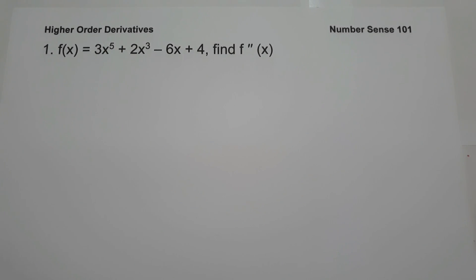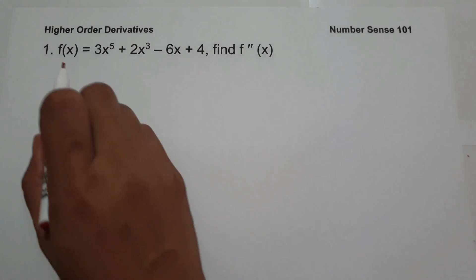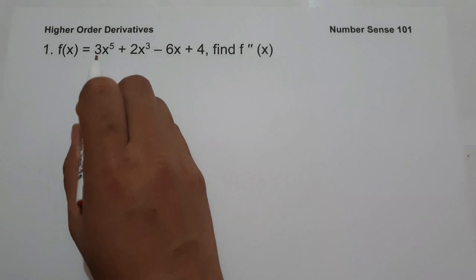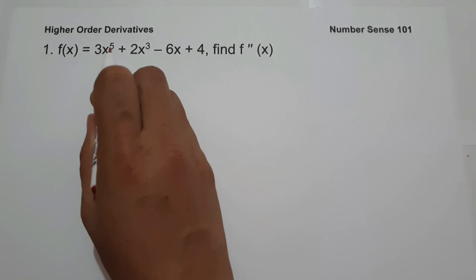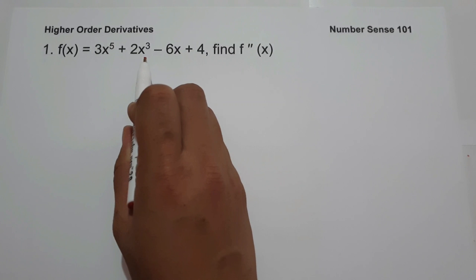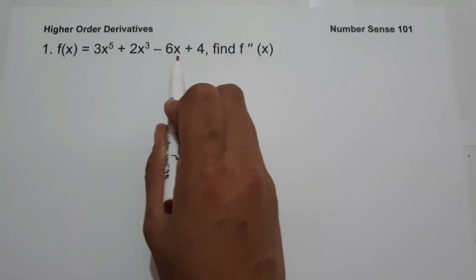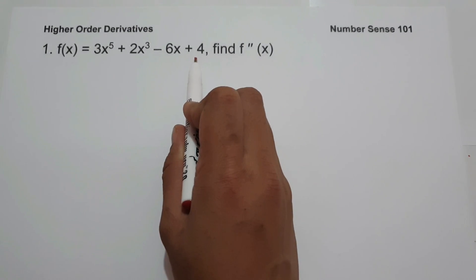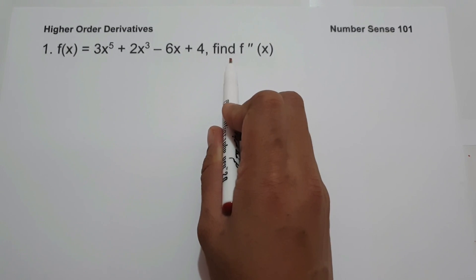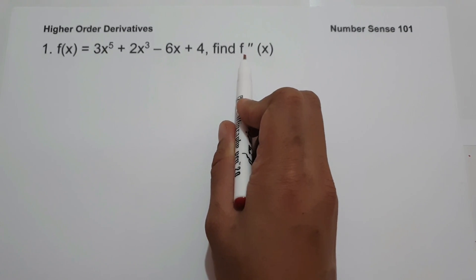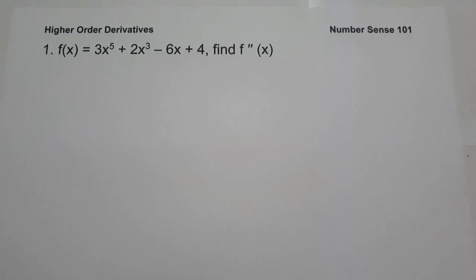For today's video, we are going to focus on finding higher-order derivatives. So let's say, if we have f of x equals 3x raised to 5 plus 2x cubed minus 6x plus 4, we are going to find the second derivative of the given function.